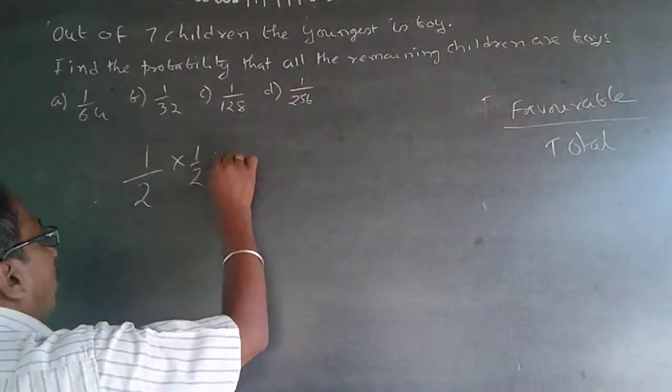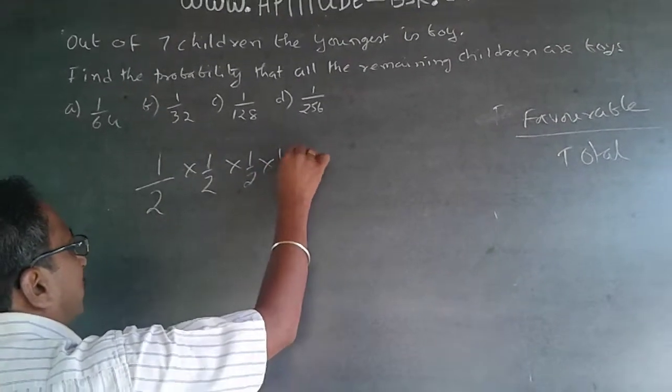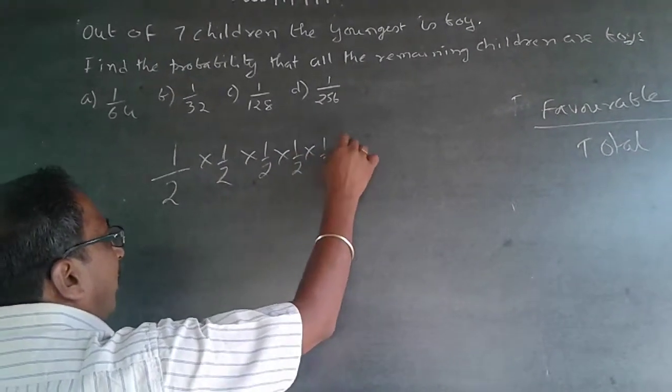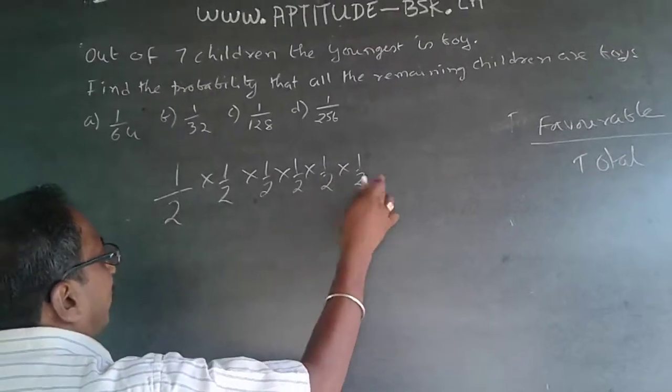So, again it will be into 1 by 2. Within this probability, within this probability, the probability will keep on reducing like this. Into 1 by 2, 1, 2, 3, 4, 5, 6.